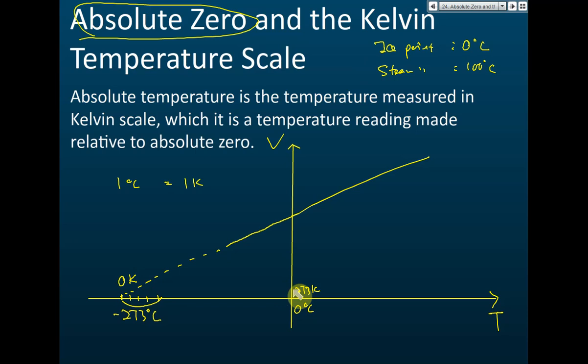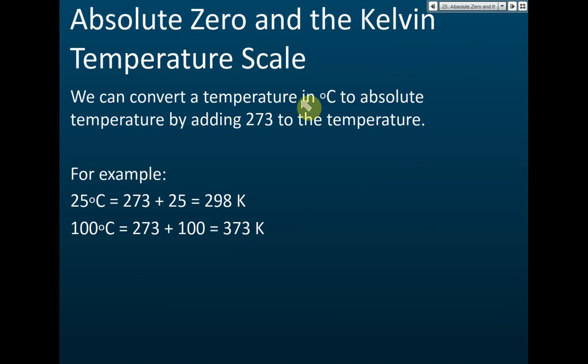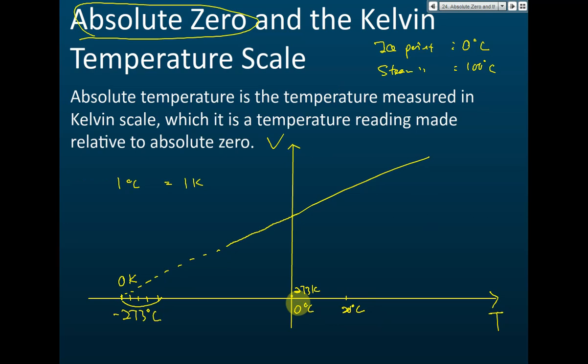The difference between the Celsius scale and the Kelvin scale is only the starting point of zero. For Celsius we start at the ice point; below that is negative. For Kelvin we start at absolute zero, where there is no thermal energy. To convert Celsius to Kelvin, add 273. For example, 20 degrees Celsius plus 273 equals 293 kelvin.